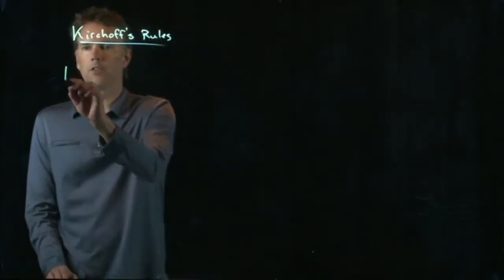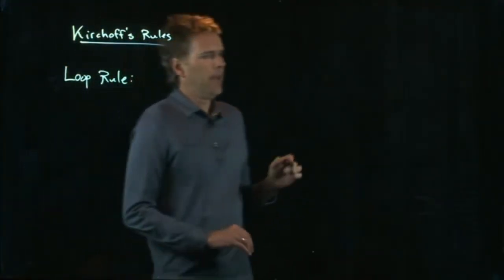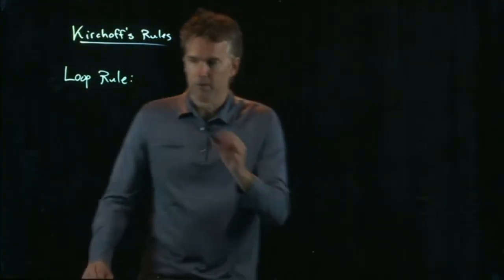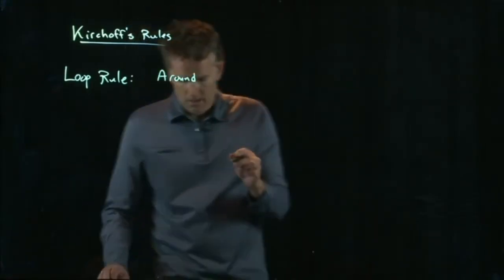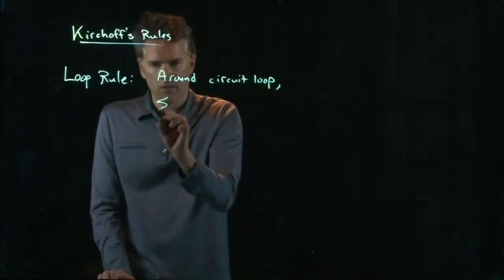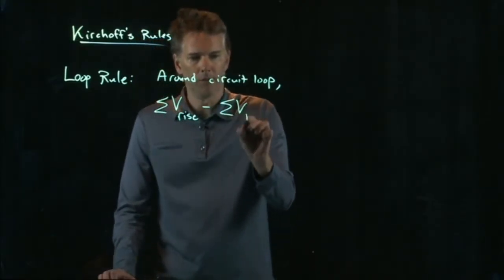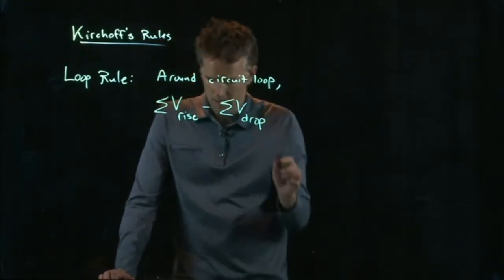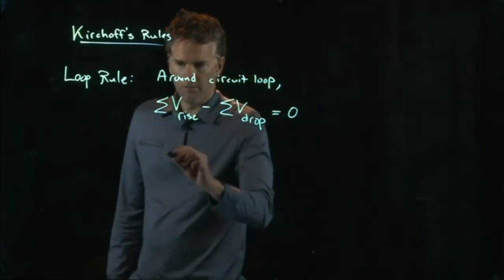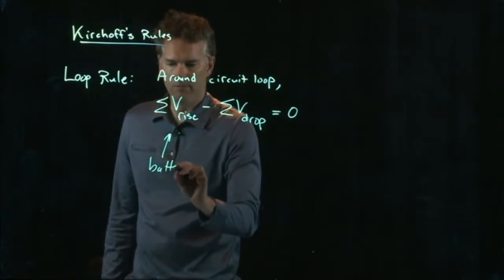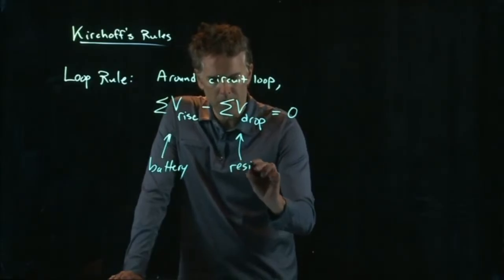The second rule is called the loop rule. And the loop rule says the following: Around a circuit loop, the voltages that are rising minus the voltages that are dropping has to equal zero. So these would be like your batteries. These would be your resistors.